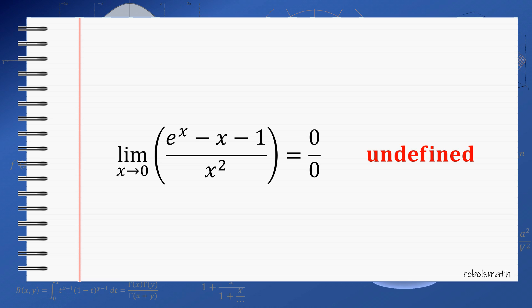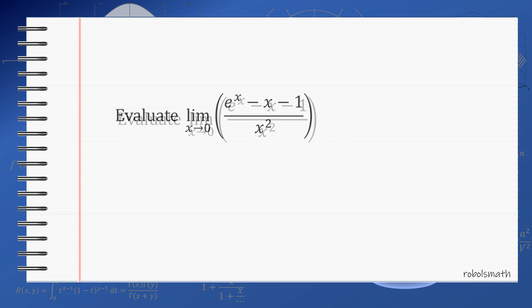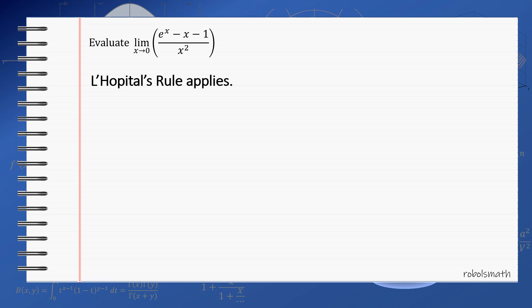Before doing the challenge, let's first try the methods we were advised not to use. First of which is the L'Hôpital's rule. Now since the limit is of the form 0 over 0, then L'Hôpital's rule applies. L'Hôpital's rule suggests that the limit of f over g is equivalent to the limit of f prime over g prime if the limit of f over g approaches 0 over 0.